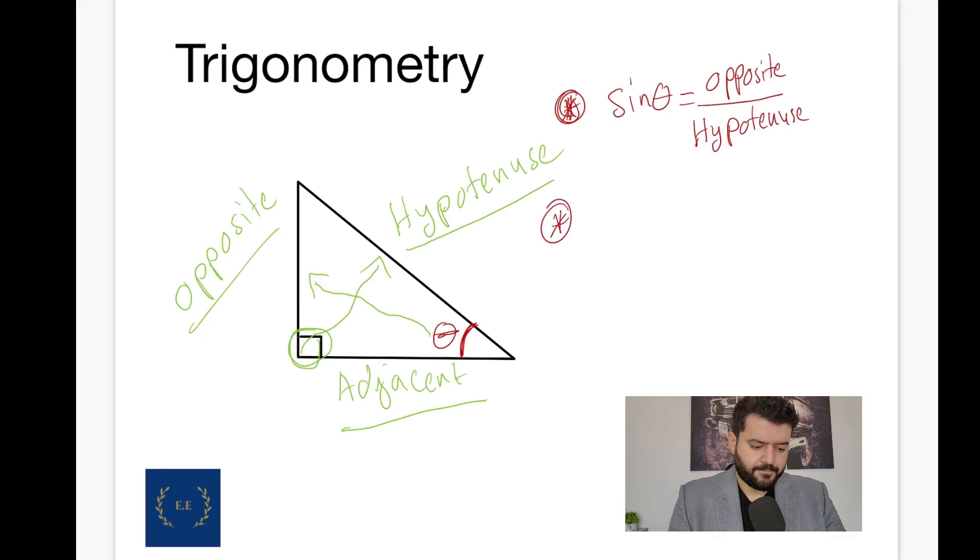Cosine of theta equals to the adjacent side, the length of it, over the hypotenuse.